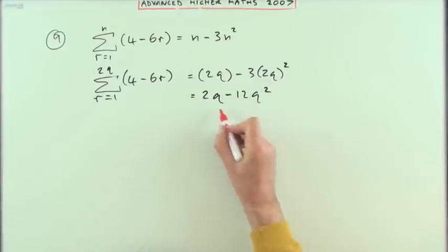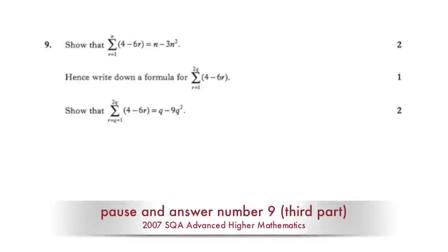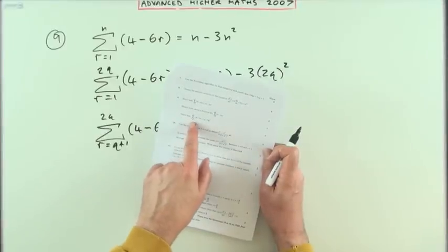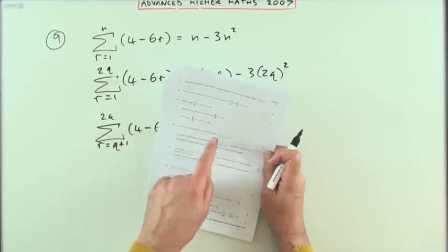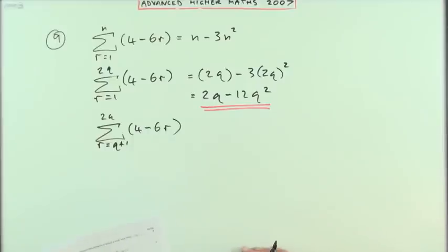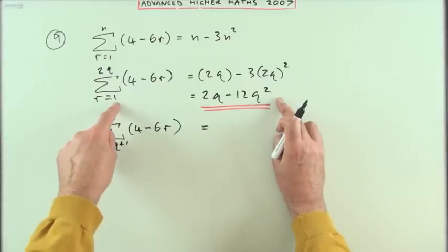Now the last part says show that the sum from q plus 1 to 2q is given by this expression. I'll not do it as a left hand side right hand side, I'll just do it directly from here and see what happens. Well, that simply means if this is the formula starting all the way from 1 up to 2q, this doesn't start from 1.